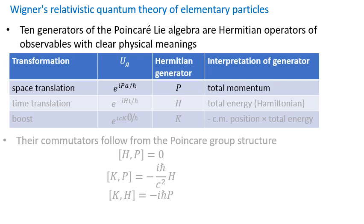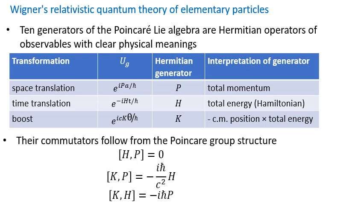The generator of space translations P is the operator of the total momentum of the system. The generator of time translations H is the Hamiltonian. And the generator of boosts K is an observable whose physical meaning is the product of the center of mass position and total energy. These operators satisfy well-known commutation relations.